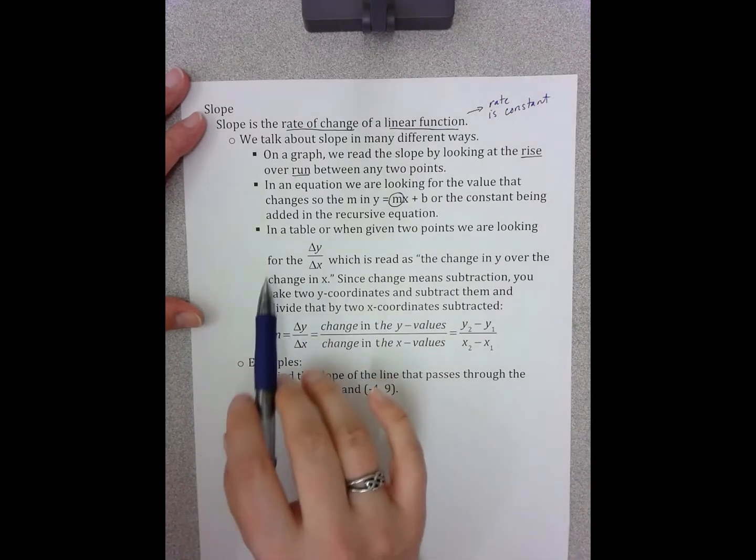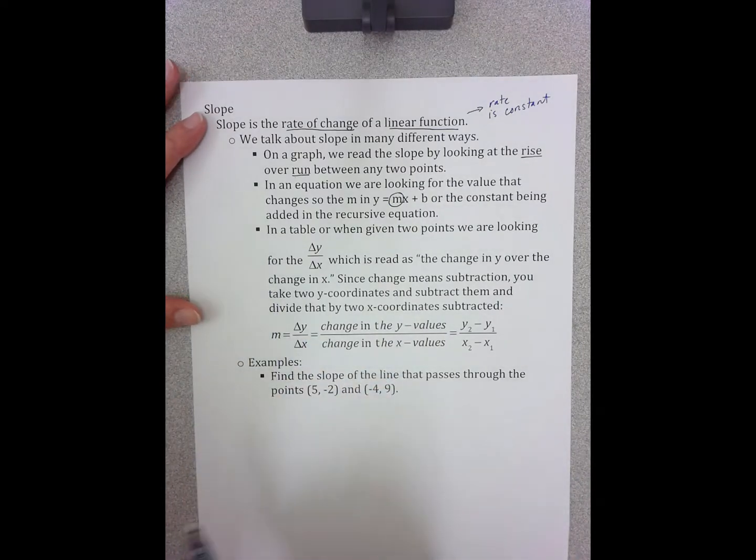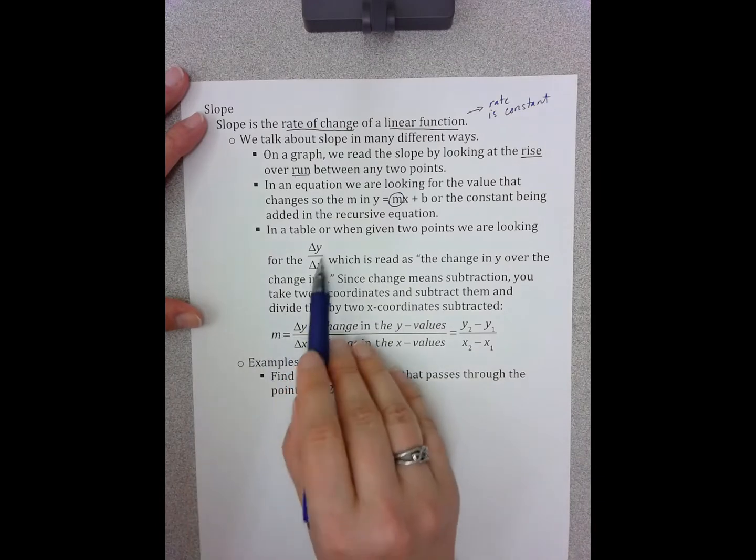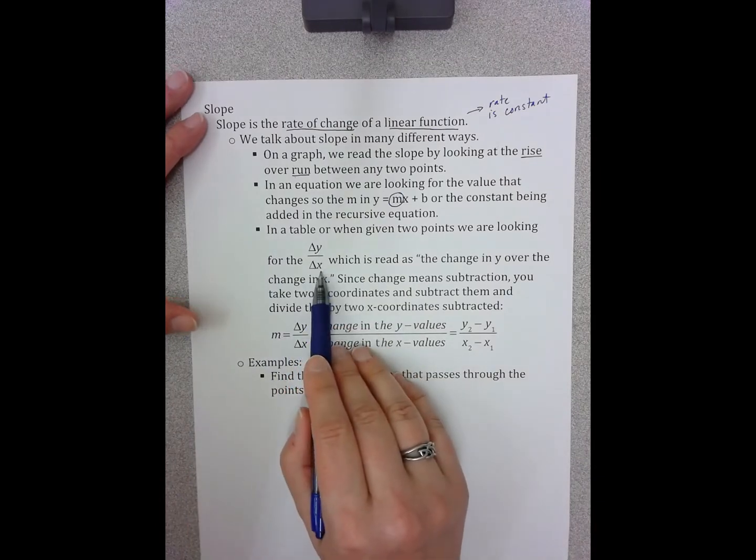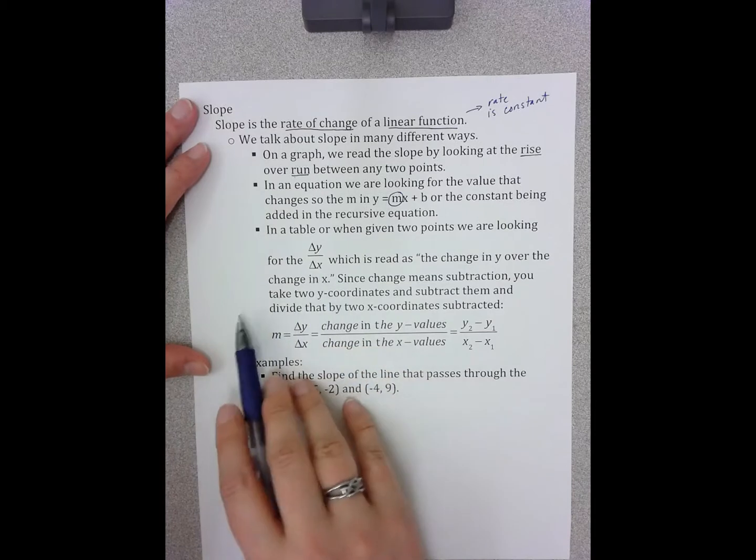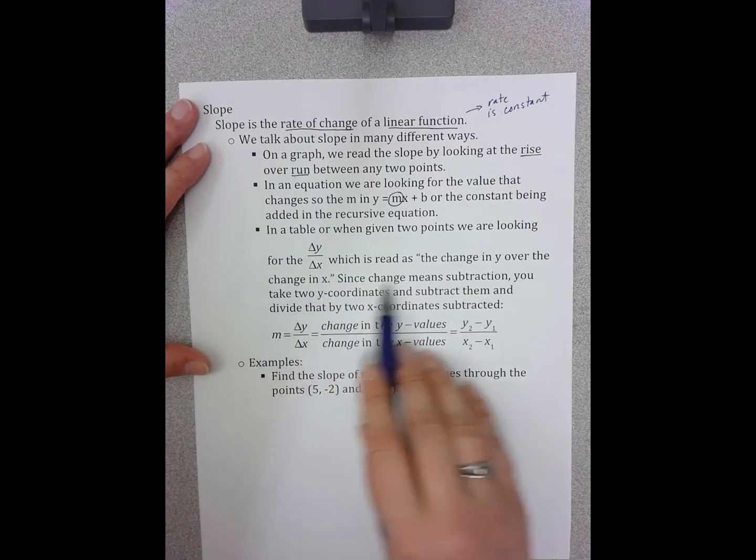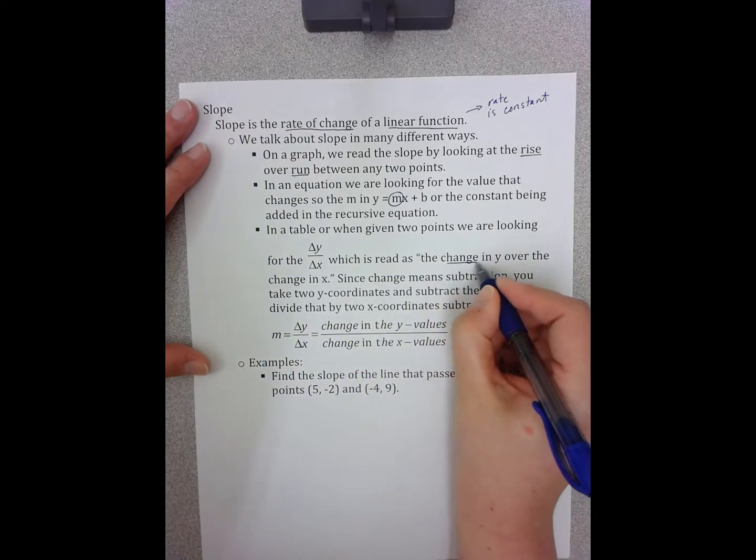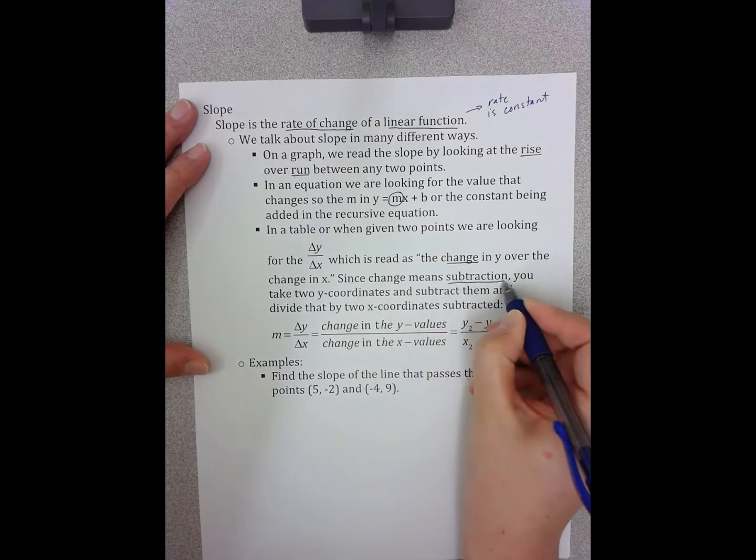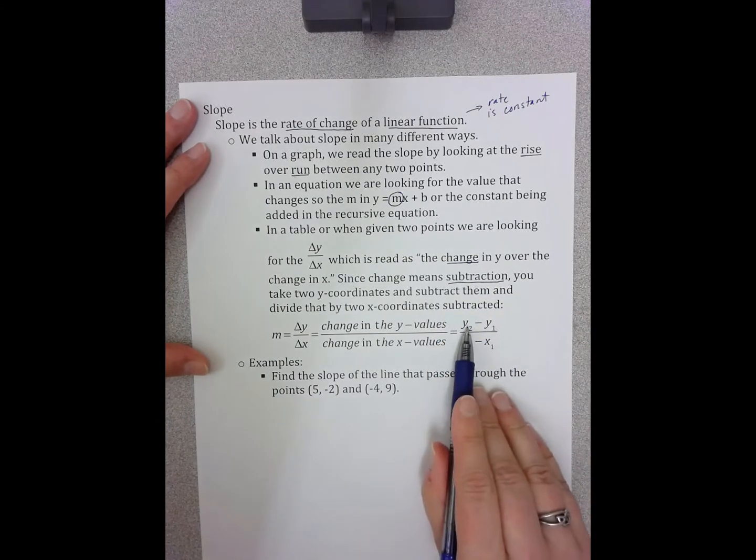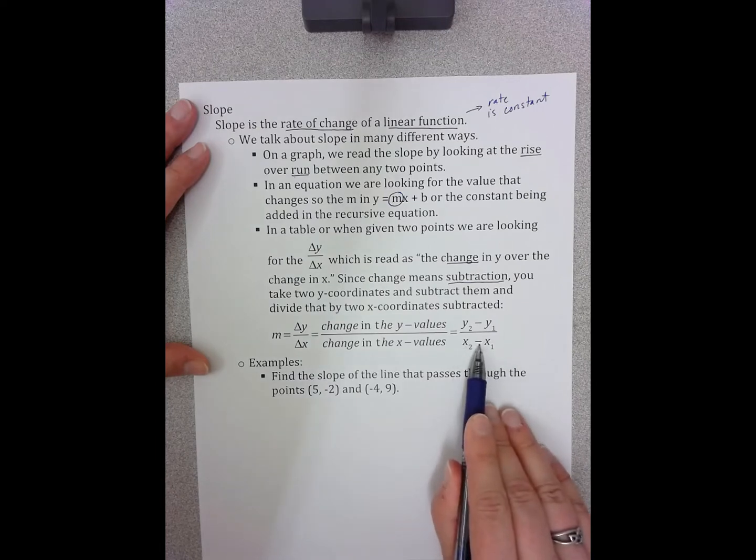In a table, we can see that it is the change in y values over the change in x values. Because the word change means subtraction, we take two y values and subtract them, and two x values and subtract them.